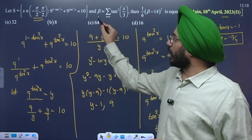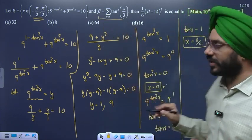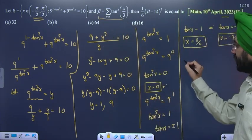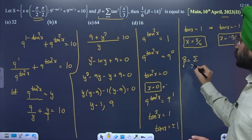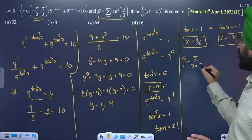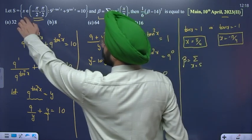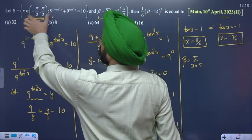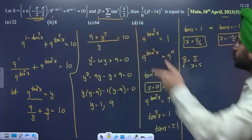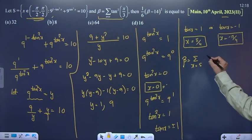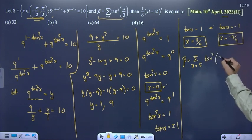Now beta is given as a summation over x. The set of values involves tan²x upon 3. We will put each value of x into this expression.